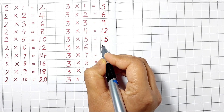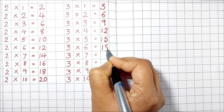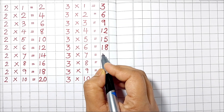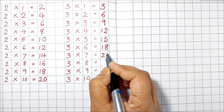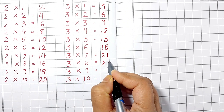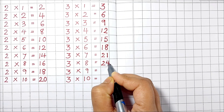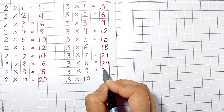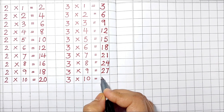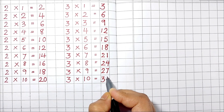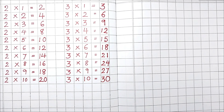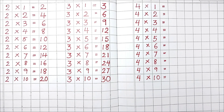3 6's are 18. 3 7's are 21. 3 8's are 24. 3 9's are 27. 3 10's are 30. Table of 4.